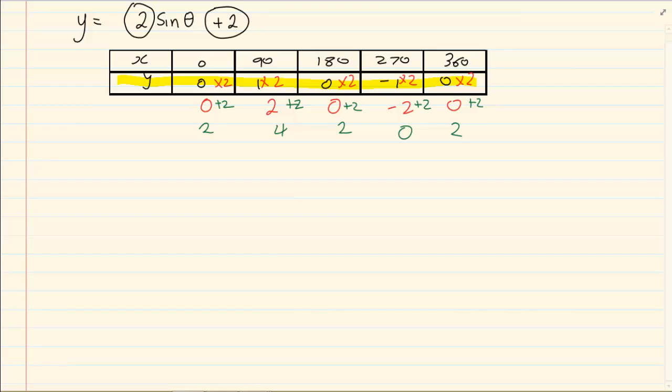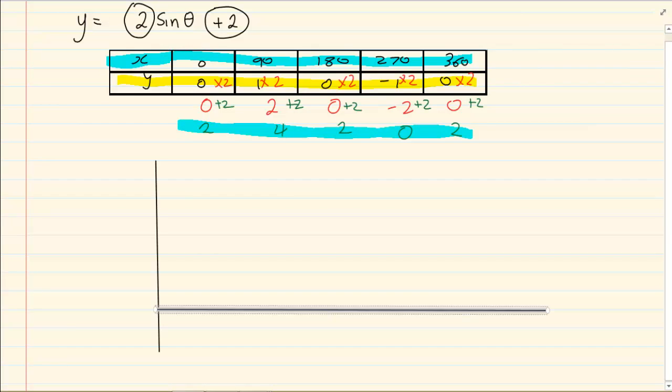When we are drawing the graph we are going to use this x value and the last y value that we added. So we know that our highest point is 4. So we are going to go 1, 2, 3, 4.